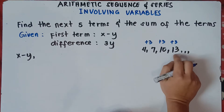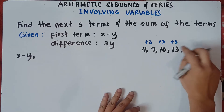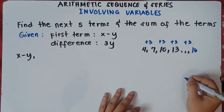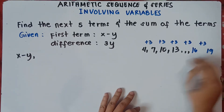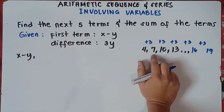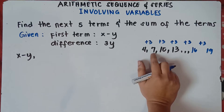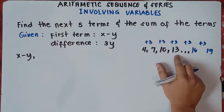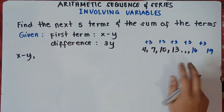Once you get the common difference, you can just simply do it in reverse. The next number after 13 should be 16, because the common difference is 3, so 13 plus 3 is 16. And the next number for 16 would be 19. Once you get the common difference by subtracting the second term by the first term, to get the next term you can just simply add the common difference. So 7 plus 3 is 10, 10 plus 3 is 13, 13 plus 3 is 16, 16 plus 3 is 19.